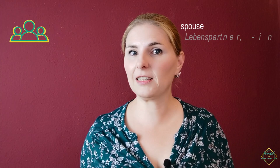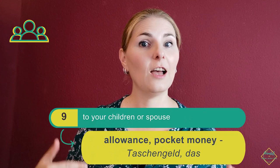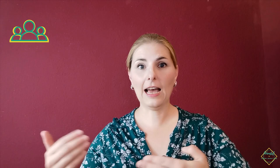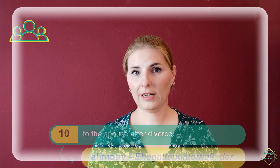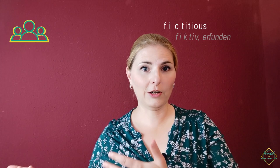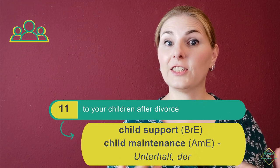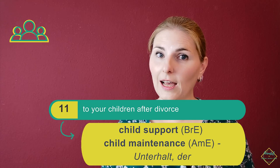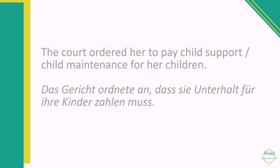If you give money to your children or maybe also to your spouse on a monthly basis, this is called pocket money — which you would use more with kids — or a more elaborate term is allowance. For example: 'My parents give me a weekly allowance for doing chores.' If your marriage broke up and you get a divorce and then you need to pay out money to your ex-partner, this is called alimony, der Unterhalt. For example: 'He was ordered to pay alimony to his ex-wife after the divorce.' If there are also kids involved, then you pay child support — the British term — or child maintenance, the American word. For example: 'The court ordered her to pay child support for her children.'